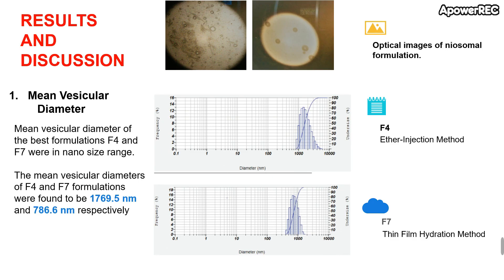The amount of drug diffused from the formulation at specific time points was determined using UV spectroscopy. As seen in the optical microscopy image, a clearly spherical and lamellar structure is observed. The mean vesicular diameter of the best formulations F4 and F7 is shown — F4 was 1769.5 nm and F7 was 786.6 nm, so F7 showed the minimum diameter.